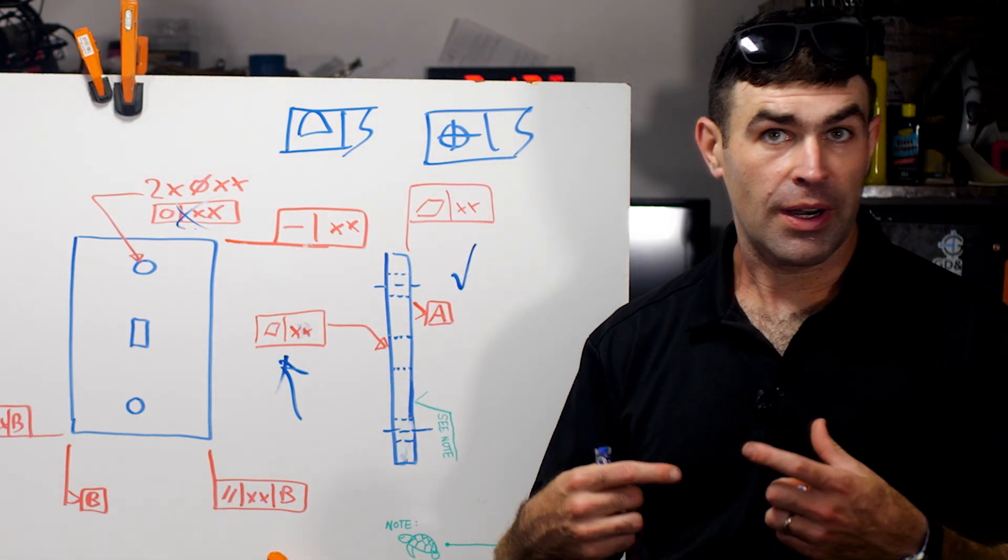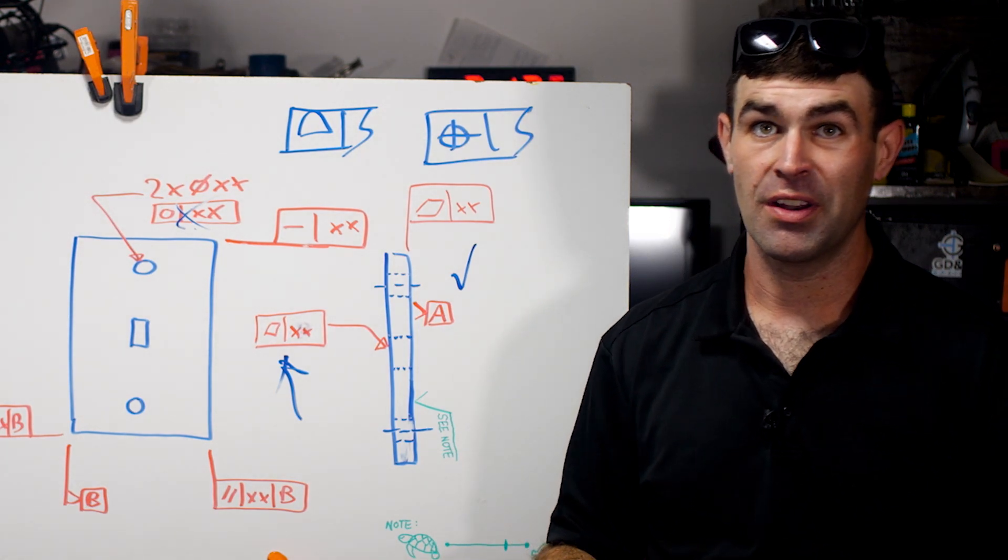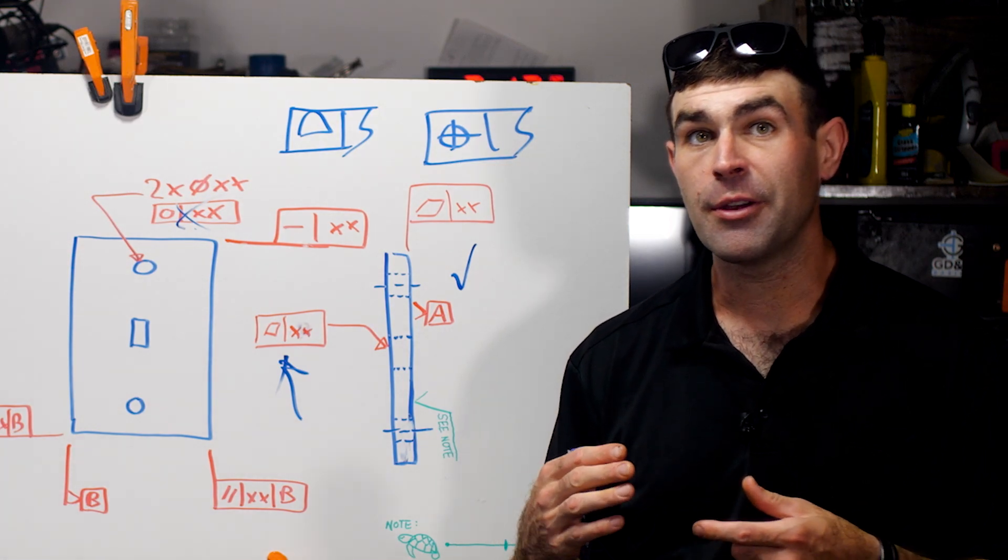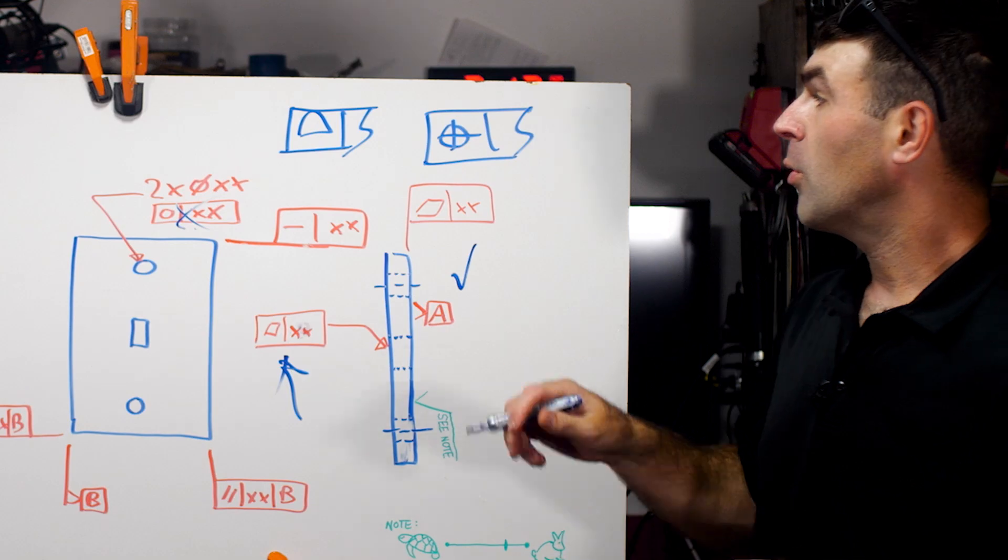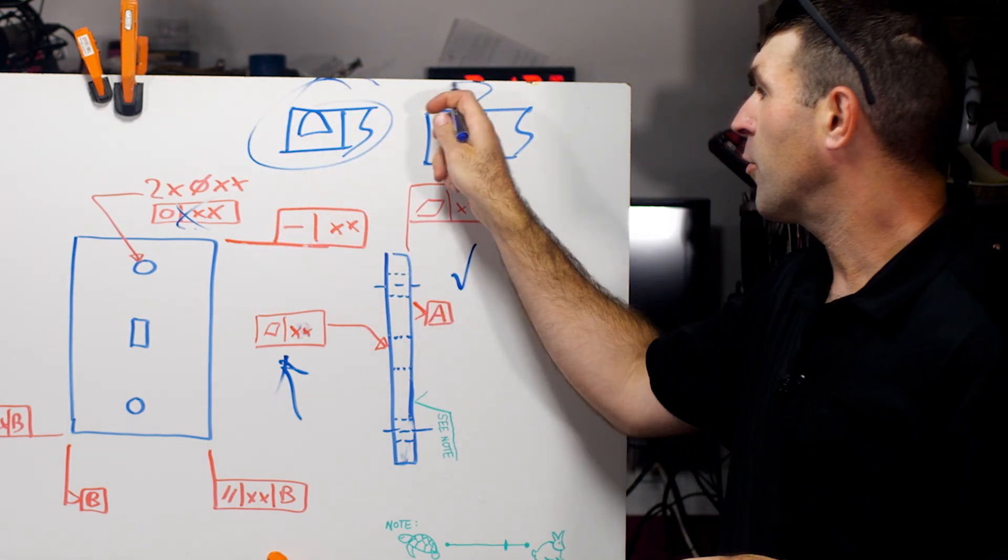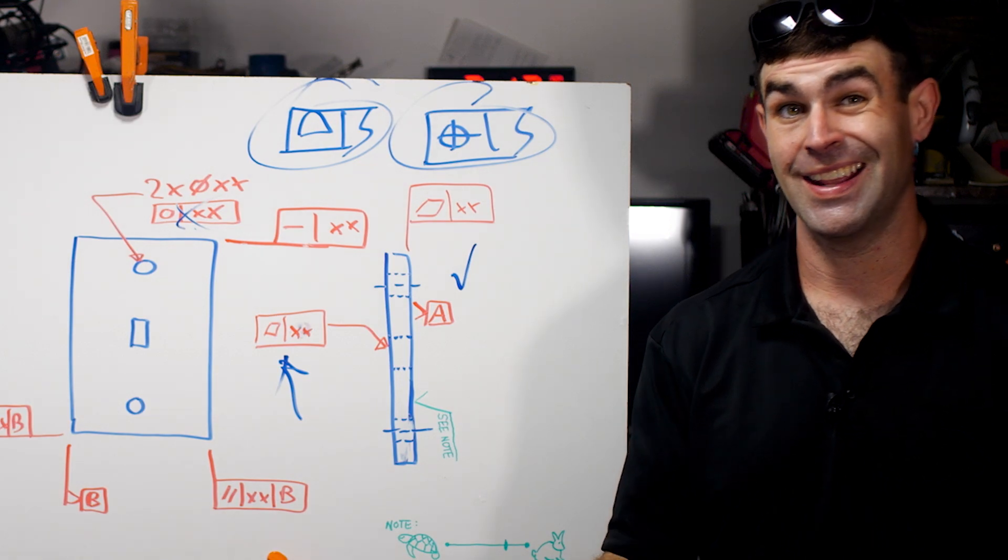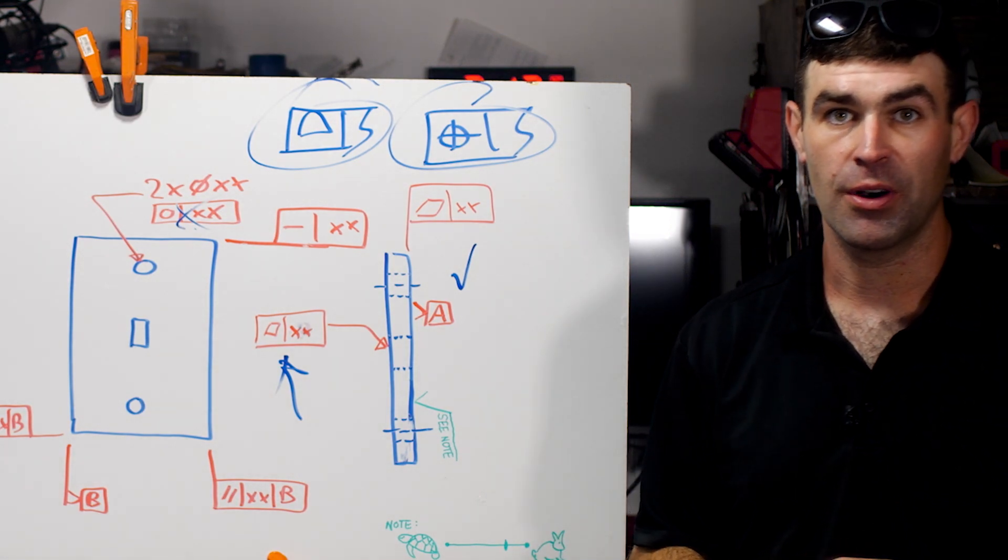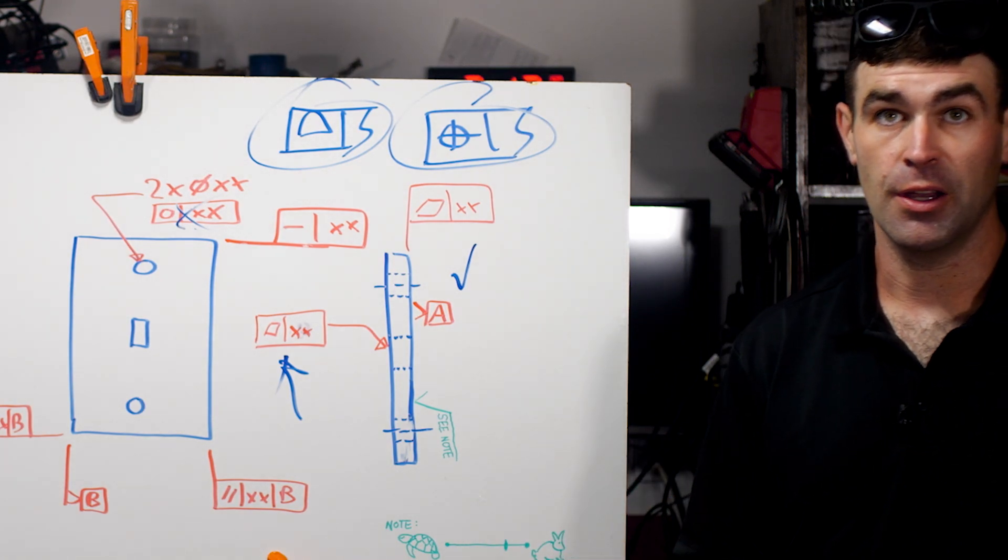Hopefully you found that helpful. Just something I wanted to bring up. I see this all the time, form and orientation, totally skipping out on all the position and profile, something you want to watch out for. If you're making drawings like this, you want to get a feel for these symbols, understand how they work, understand how your datum reference frame works, and then kind of go back to the drawing board. If you enjoyed this video, please like, subscribe, leave a comment down below.